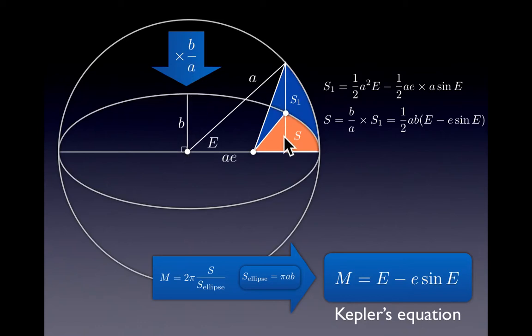Once this is realized, this area can be related to a much simpler area, the area of this shape denoted here by s1, by this factor of b over a.